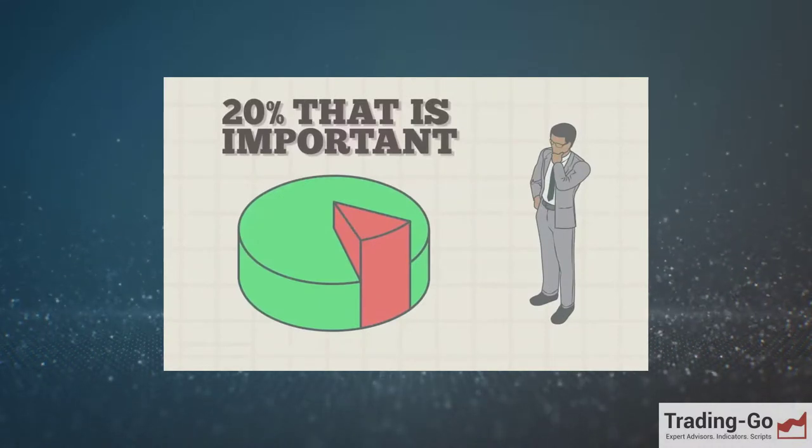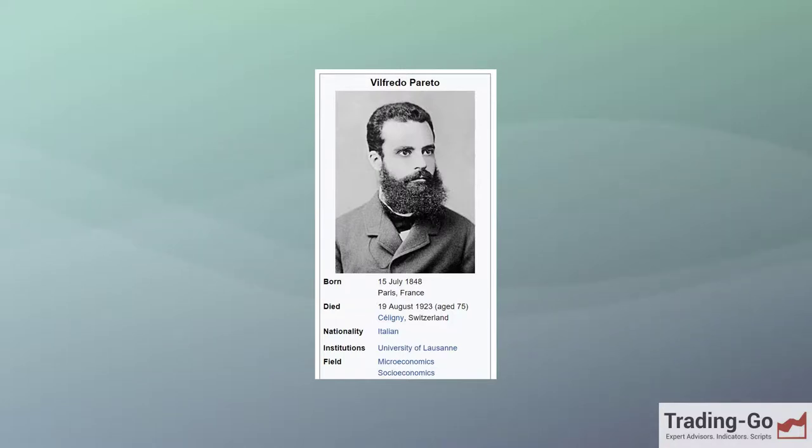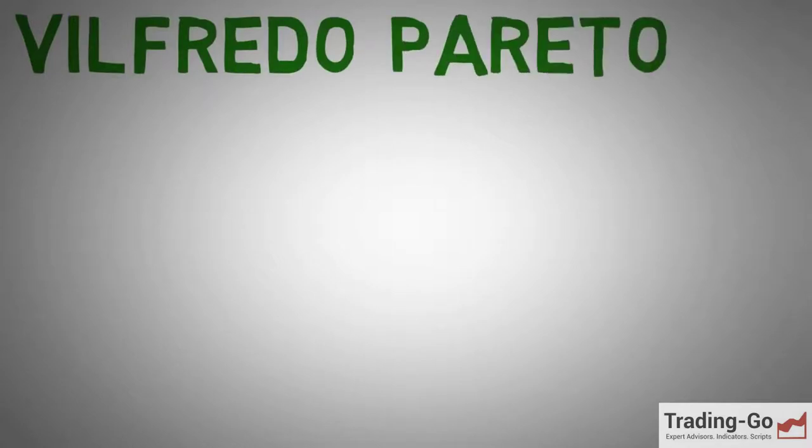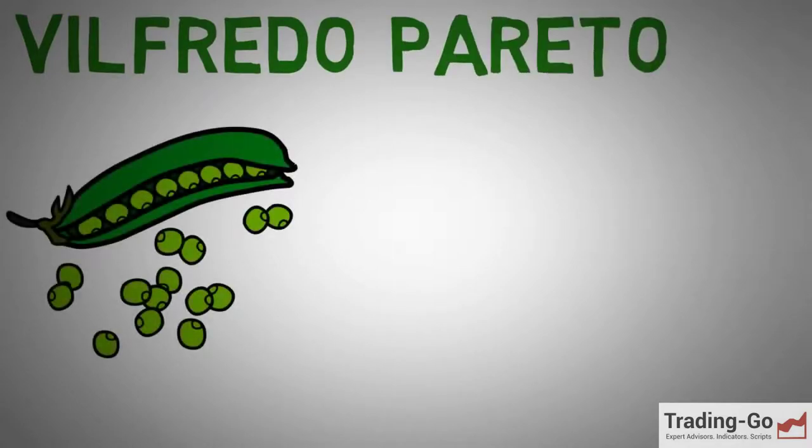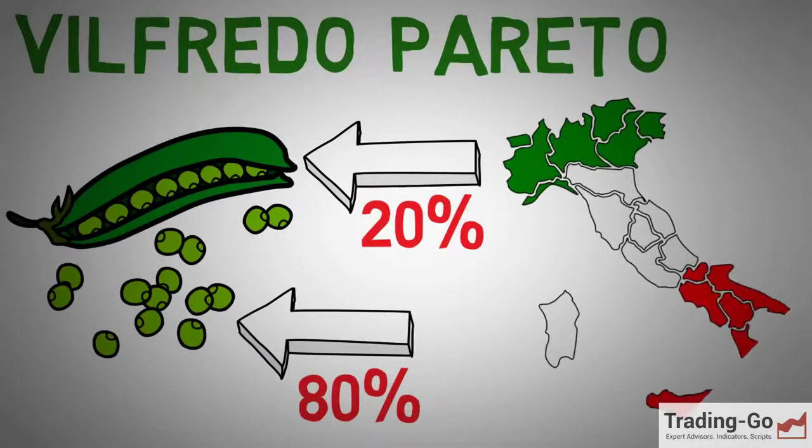This principle is used by well-known rich and successful people. The first mention of the Pareto Principle dates back to the 19th century, when the economist Wilfredo Pareto researched wealth distribution in Italy. During the study, scientists paid attention to a strange pattern. 80% of the wealth of Italy belonged to only 20% of the population, while 80% of the Italians owned 20%. To confirm the authenticity of his own observations, Pareto continued his research and made two important discoveries.